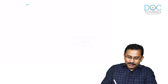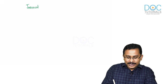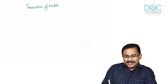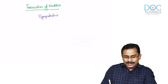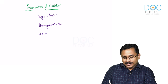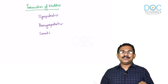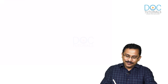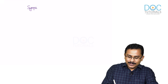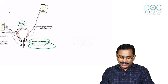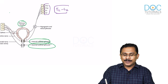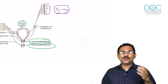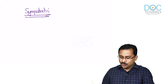Now let us go into the innervation of the bladder. The bladder has a very rich innervation by the sympathetic, the parasympathetic, as well as the somatic supply. First, let us look at the sympathetic supply. Sympathetic supply to the bladder is mainly from the T11 to L2 segments of the spinal cord — some textbooks mention T9 to L2, but in general we take it as T11 to L2.